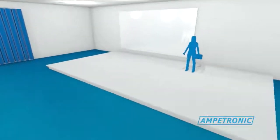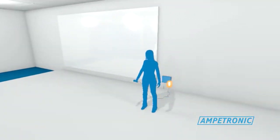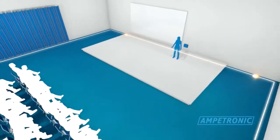The simplest form of area coverage hearing loop system is a perimeter loop, where the cable is laid around the perimeter of the room to cover the entire area.